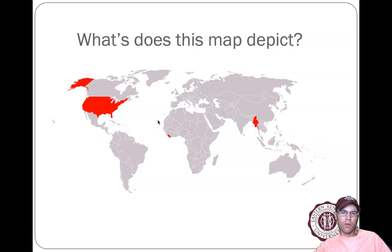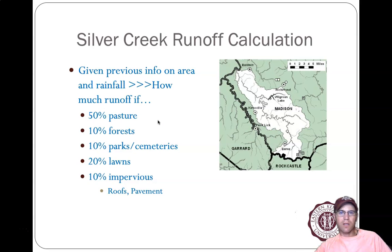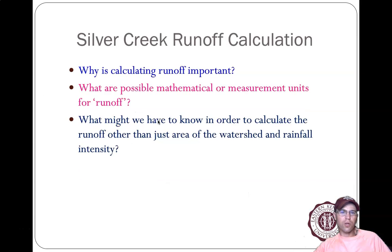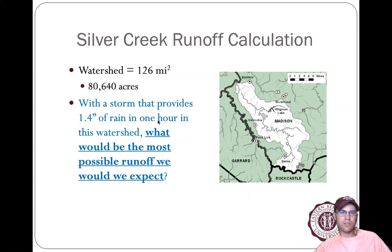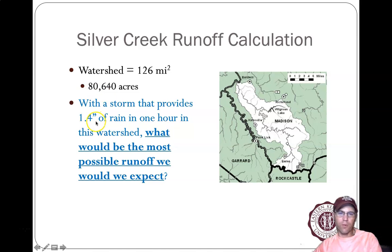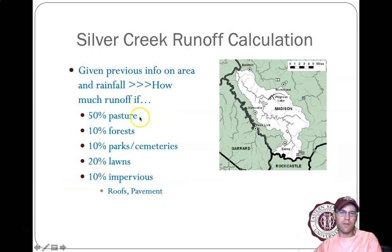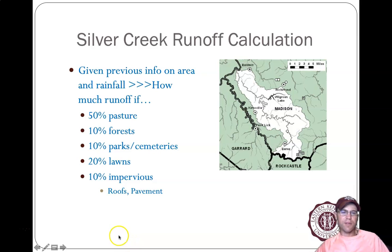We're going to do a sample calculation. Given that the Silver Creek watershed is 80,640 acres, 1.4 inches of rain fell, and here are the different land uses — I'll go through this example and put that up in the next video.